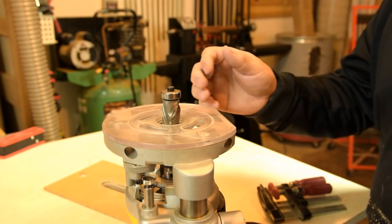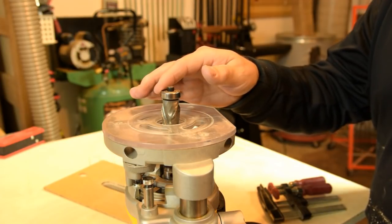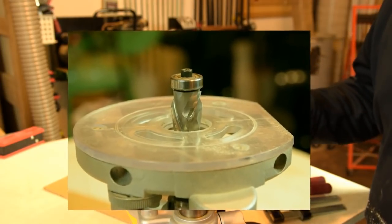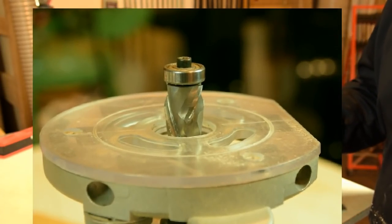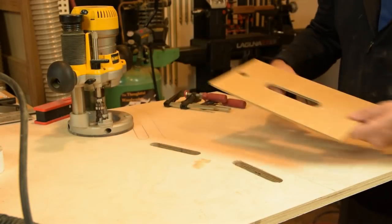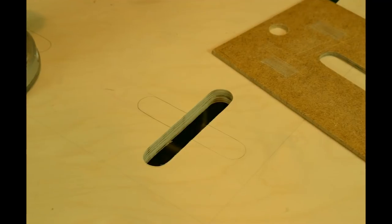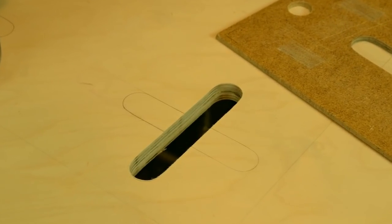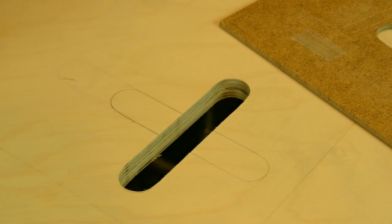For the second pass on the handle openings we'll use this bearing guided spiral bit. It's a little larger diameter and makes a real clean cut. And then just pop your template off and move on to the next opening. The result is a nice clean cut with minimal tear out top and bottom.